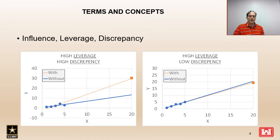In the plot on the right we see an example with high leverage but a low discrepancy. The orange square value still has a strong influence on the fit of the curve, but because it has a low discrepancy — meaning it is relatively consistent with the rest of the data — the general fit of the curve does not change very much. However, it's important to know that when there is high leverage and a low discrepancy the uncertainty will be reduced due to the high leverage.